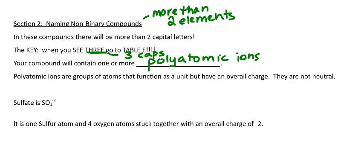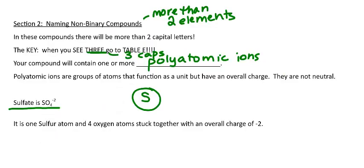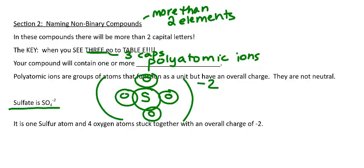There are many atoms that function as a unit but have an overall charge. In your notes, you have a drawing with a central atom. If we're drawing the polyatomic sulfate, you can see from Table E that sulfate is one S and four O's. They function as a group — they're bonded — and they have a negative two charge. The S is in the middle, with four oxygens around it, and that whole thing has a negative two charge. This travels around as a unit.